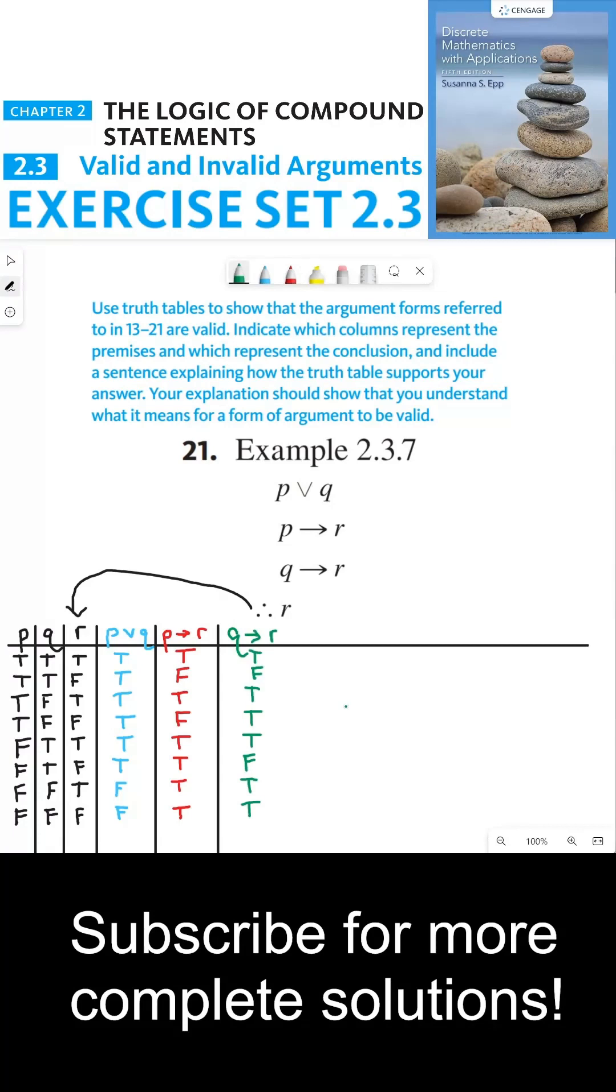So by default, we assume that the argument form is valid. And we have to find a counterexample to determine whether or not the argument form is invalid.